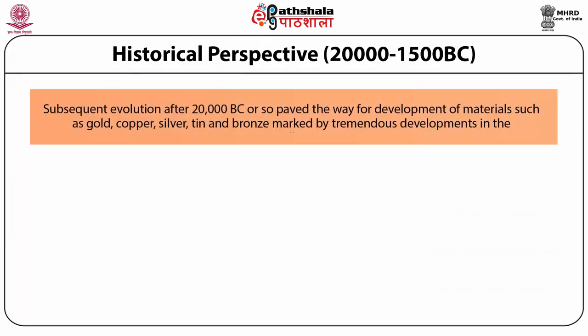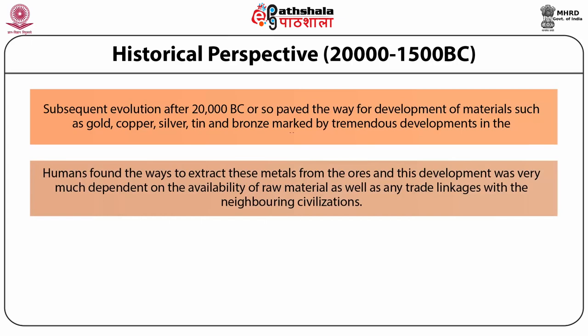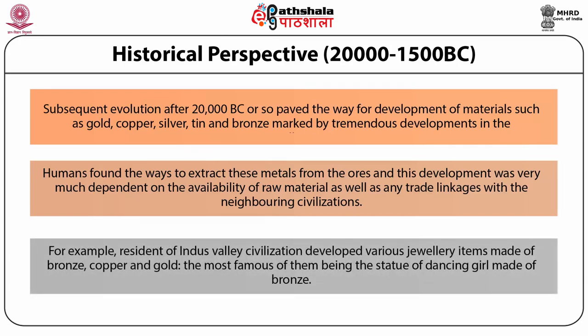Subsequent evolution after 20,000 BC paved the way for the development of materials such as gold, copper, silver, tin and bronze, marked by tremendous developments in metallurgy. Humans found ways to extract these metals from ores, dependent on the availability of raw material and trade linkages with neighboring civilizations. For example, residents of the Indus Valley civilization developed various jewelry items made of bronze, copper and gold, the most famous being the statue of a dancing girl made of bronze.